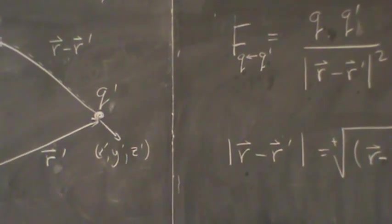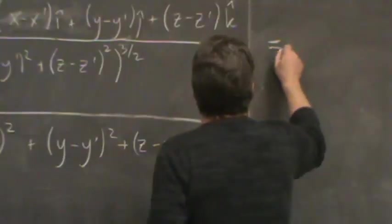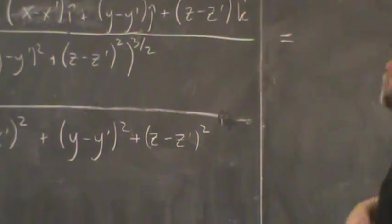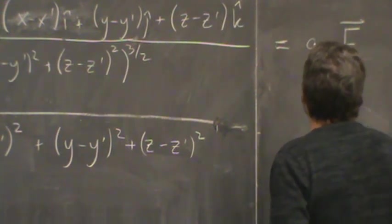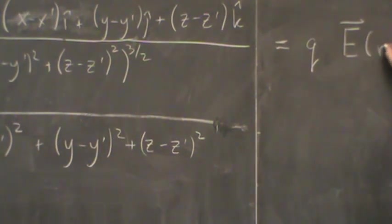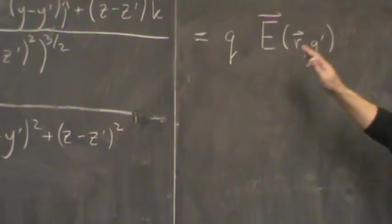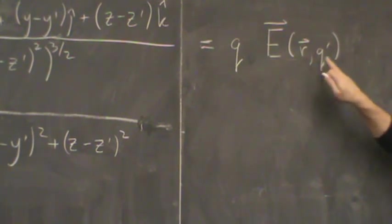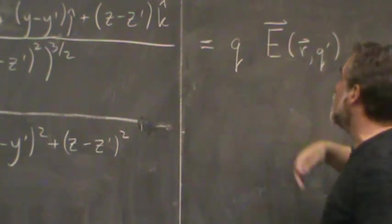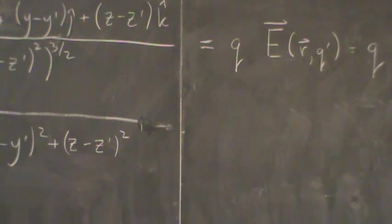In this course we're going to be worried almost entirely about fields, because it's the field that exerts the force on a charged particle. I could write that the force that q prime exerts on charge q is equal to the magnitude of charge q times the electric field at position r, at position r due to charge q prime. What I've just written here is a completely informal way of writing this — I just wanted to put these things in here to remind you that it's at that point due to that charge.